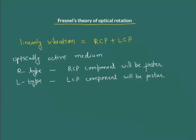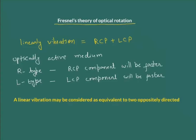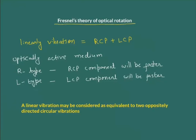Let us try to justify how, when we combine LCP and RCP vibrations, what we get should be a linear vibration. Our statement is: a linear vibration may be considered as equivalent to two oppositely directed circular vibrations. Now let us look at its justification.